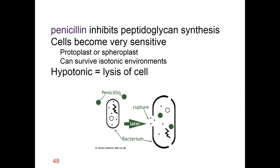Peptidoglycan is really important to many bacteria because it is part of the cell wall. If you inhibit peptidoglycan synthesis, this can cause cells to become very sensitive to osmotic pressures. Fluids moving in cause the cell to start to swell, but the cell wall helps to maintain the cell and keep it from lysing. If you inhibit peptidoglycan synthesis, that cell wall is not very strong, and if fluids move in, the cell can burst.